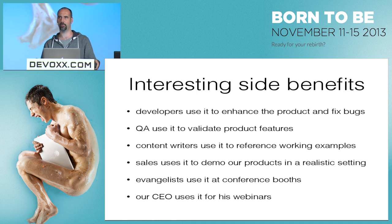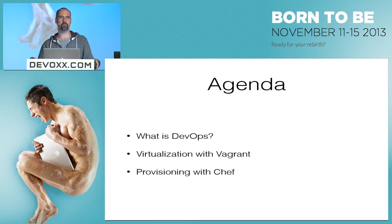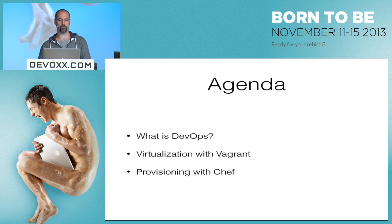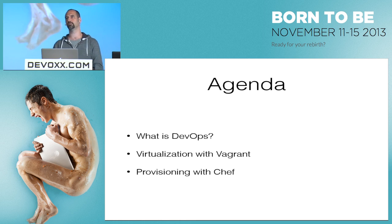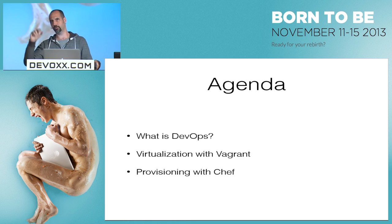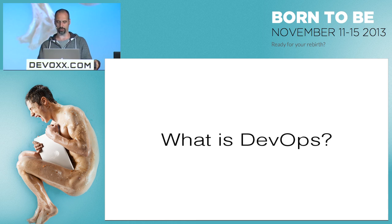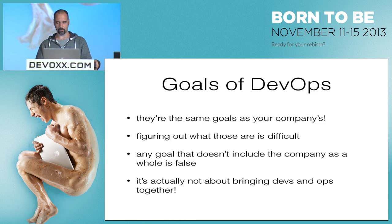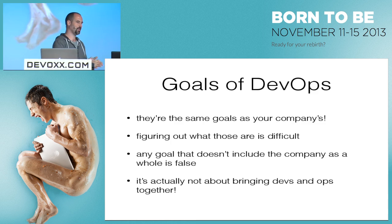Since we only have 30 minutes, I've reduced this a bit. I'm going to talk about three key points: first, DevOps — a word a lot of people are talking about but still have different conceptions of; then Vagrant, which allows easy virtualization; and Chef, for provisioning.